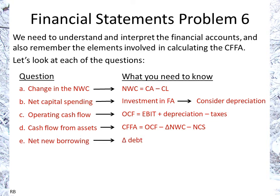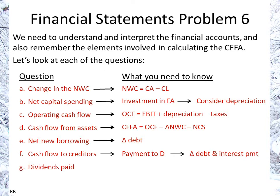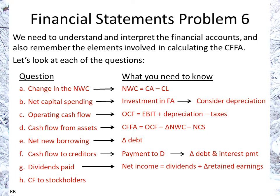Net new borrowing is simply the difference in debt. To calculate cash flow to creditors, we consider the net new borrowing and the interest payment from the income statement. For dividends paid — if we're not given that information directly, we can calculate it using the income statement and balance sheet. Net income goes to either dividends or addition to retained earnings. Cash flow to stockholders considers dividends and any changes from new share issuances.